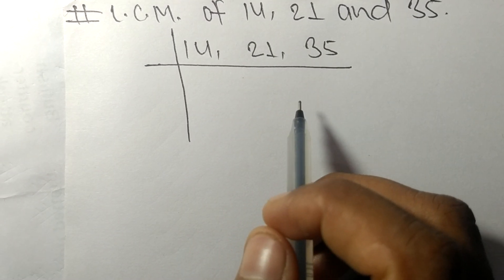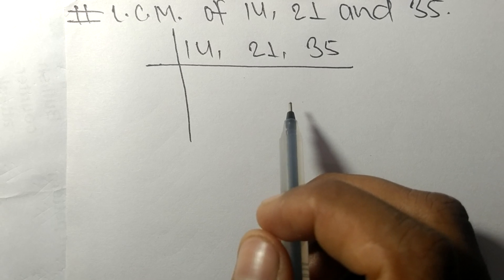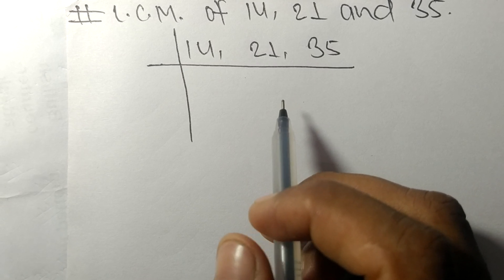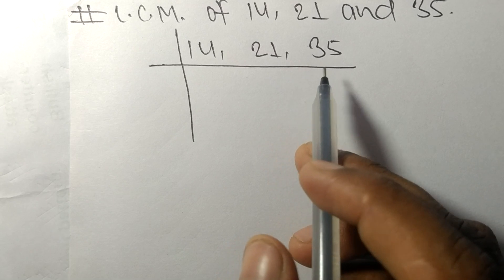So to find LCM, we have to choose the lowest number that can exactly divide at least any two of these numbers.